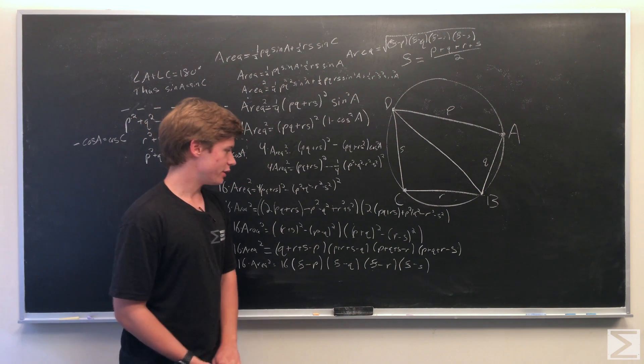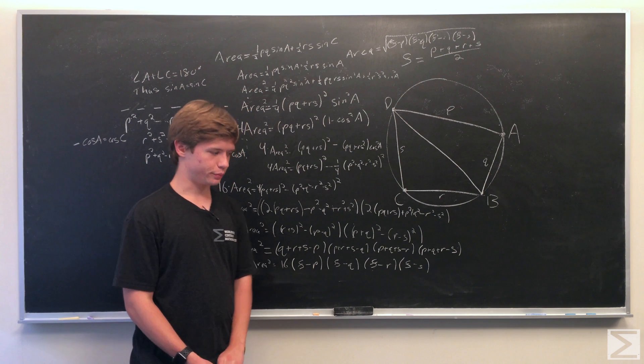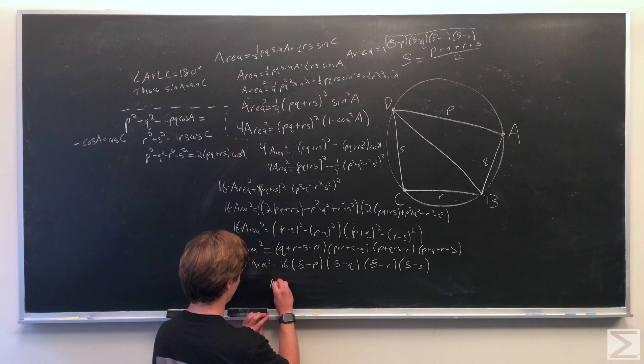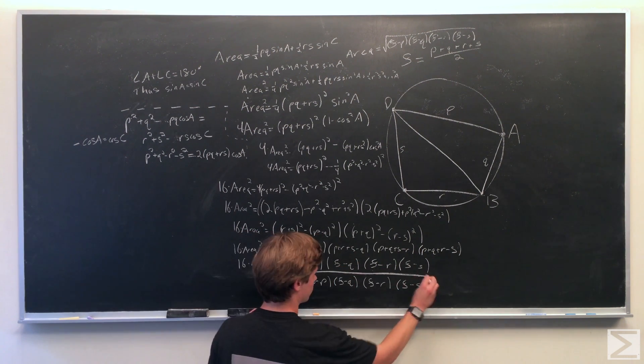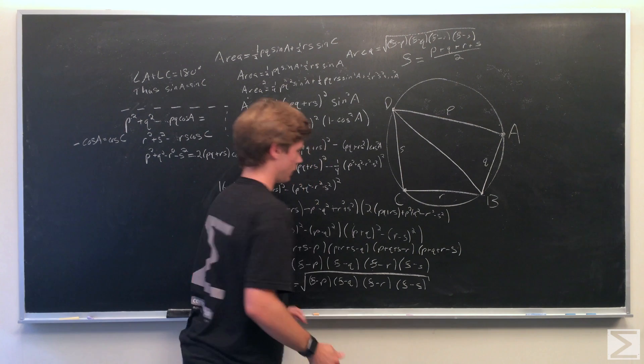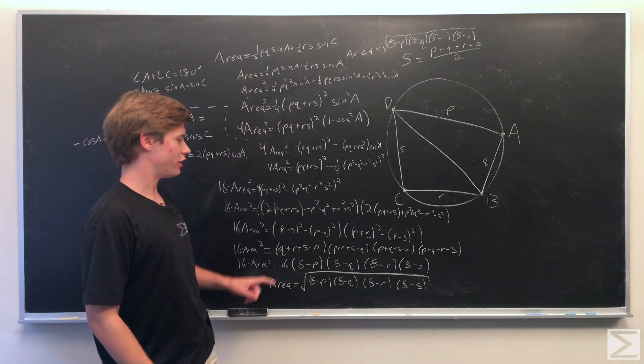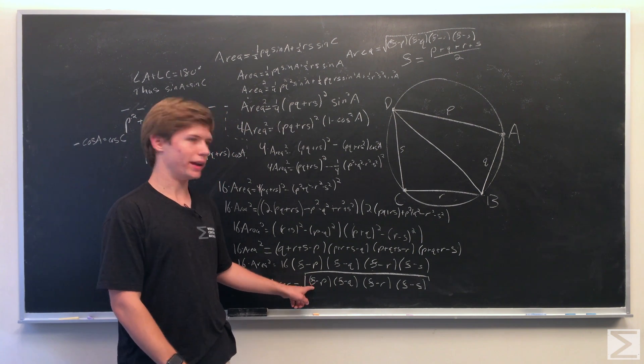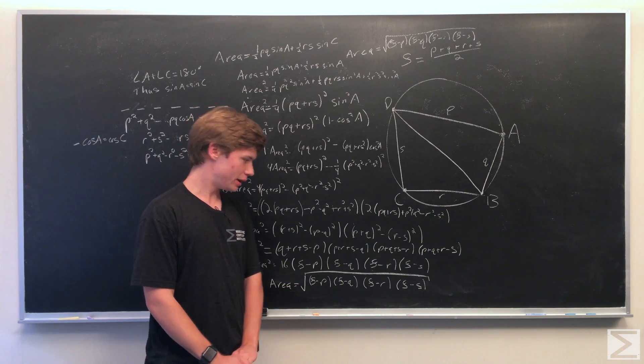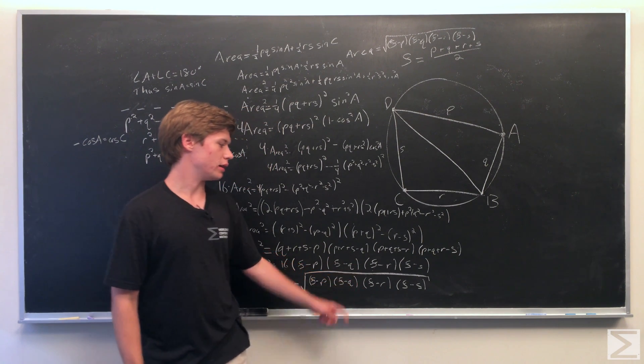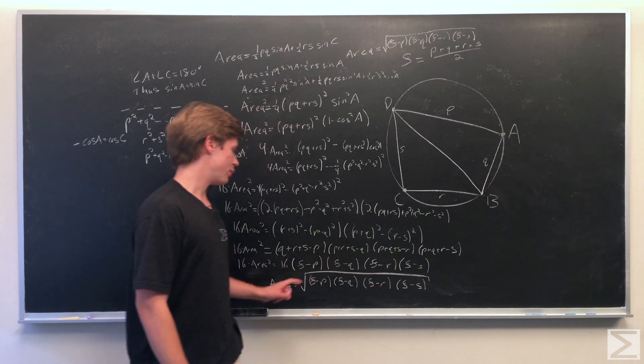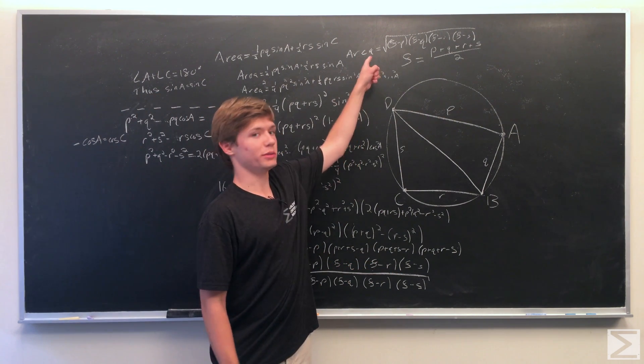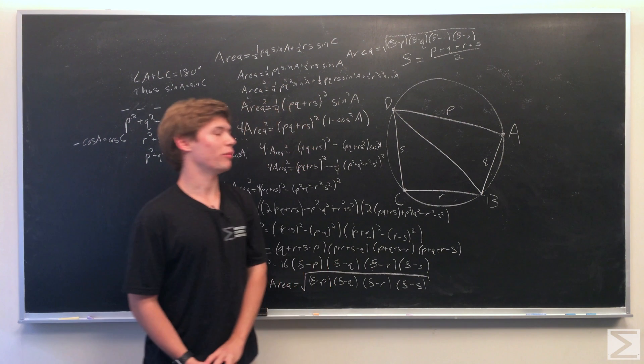So now with this expression, all there is left to do is to divide both sides by 16 and take the square root of both sides. As you can see, after all this calculation, we find that the area is equal to the square root of semi-perimeter minus p times semi-perimeter minus q times semi-perimeter minus r times the semi-perimeter minus s. And that matches what Brahma Gupta said. And that proves the formula.